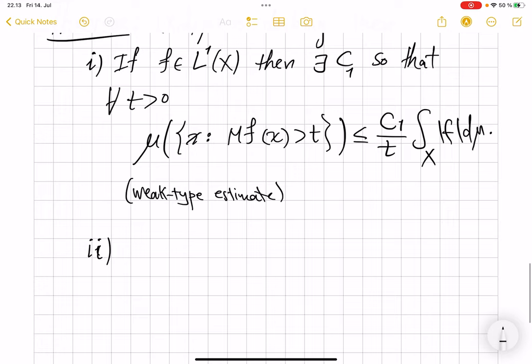But this weak type estimate is actually often sufficient, not only in application, but also in proof of the second part of this theorem. Actually, what you do is you first prove the weak type estimate, and then you have the L infinity to L infinity boundedness quite trivially. And then from interpolation you get that it's true for all p between 1 and infinity.